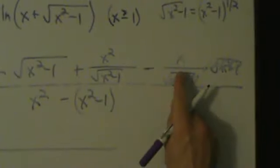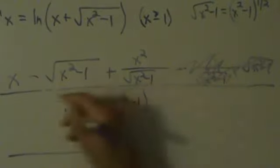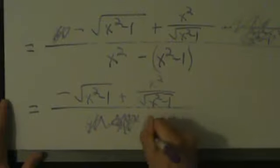Now let's simplify everything. On the top, x and minus x cancel, leaving us with minus root x squared minus 1 plus x squared over root x squared minus 1. On the bottom, x squared minus x squared cancel, and we're left with plus 1. Dividing by 1 is just doing nothing, so we really have: negative root x squared minus 1 plus x squared over root x squared minus 1.